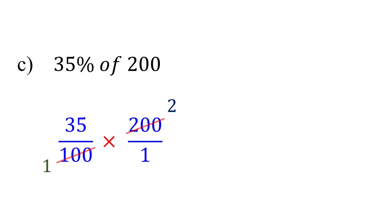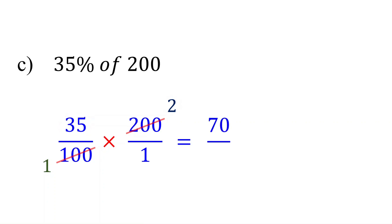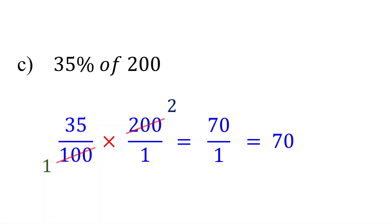Now multiply across. In the numerator, 35 times 2 equals 70. In the denominator, 1 times 1 equals 1. Therefore, 35% of 200 is 70.